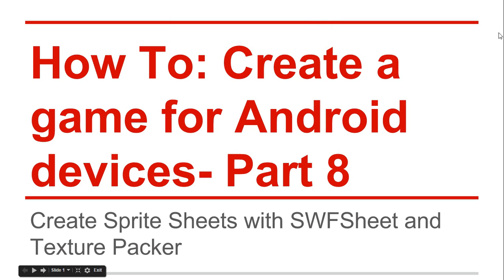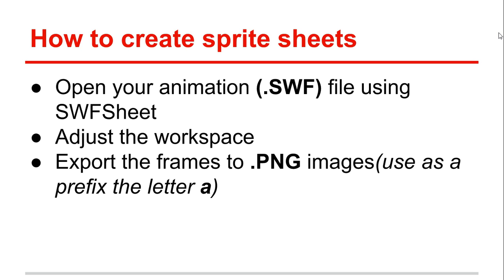How to create a game for Android devices, part 8: create sprite sheets with SWF Sheet and Texture Packer. The first thing we need to do is open your animation or the dot SWF file using a software called SWF Sheet. Look at the description below to find the link, then adjust the workspace to your animation space and export the frames to dot PNG images.